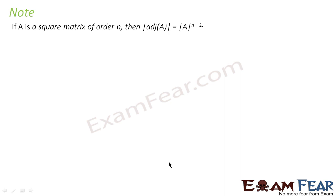There is a note: if A is a square matrix of order n, then the determinant of the adjoint of A is nothing but determinant of A to the power n minus 1.